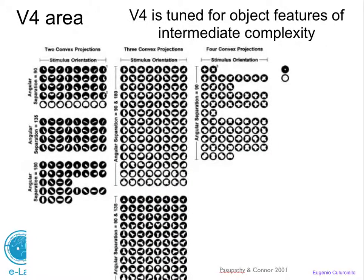In the V4 area, more complex shape information is aggregated — things like corners, T-junctions, or curved shapes formed by two lines. Recordings done about ten years ago in the V4 area show plausible receptive fields: not just lines anymore, but curved shapes, T-shapes, and more complex forms. These experiments were limited by lack of biomedical instrumentation capability, but optical techniques are improving and may help explain more of what V4 does in the future.